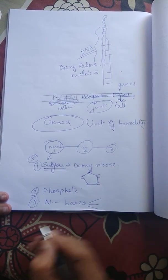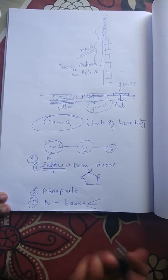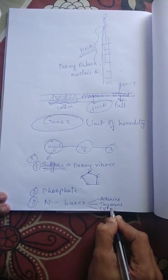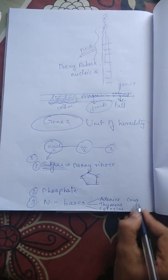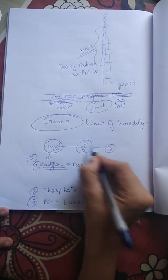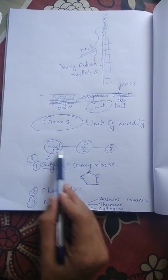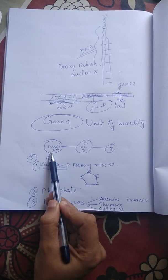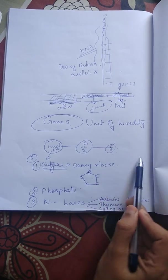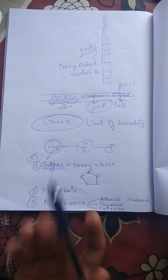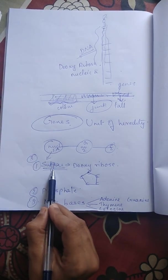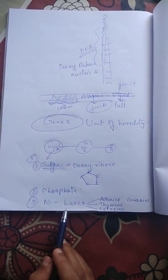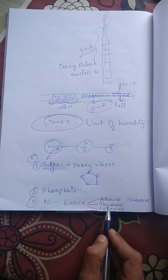Nitrogen bases are of four types. One nucleotide has one nitrogen base. The four nitrogen bases are: adenine, thymine, cytosine, and guanine. So one nucleotide is made of one pentose sugar — deoxyribose in DNA — one phosphate group, and one of four nitrogen bases.